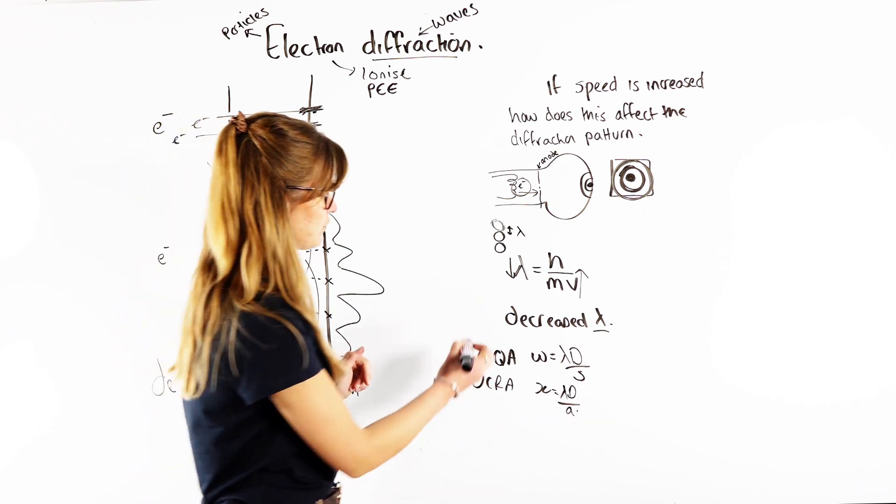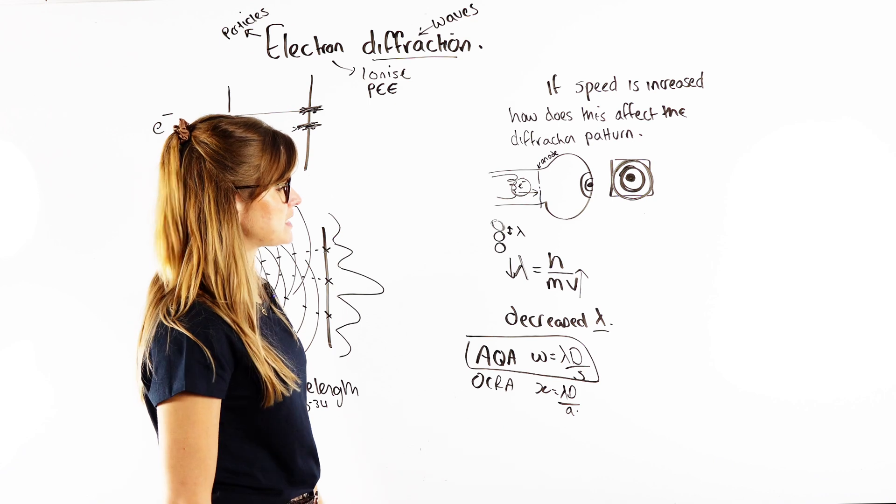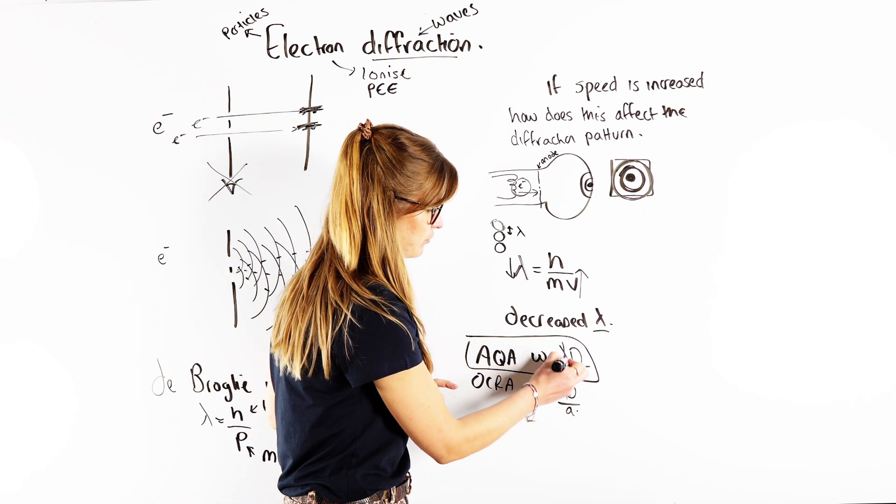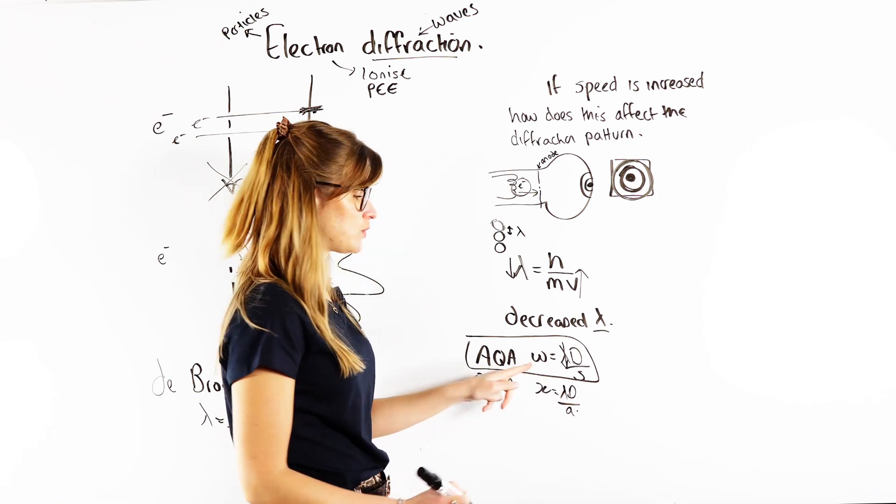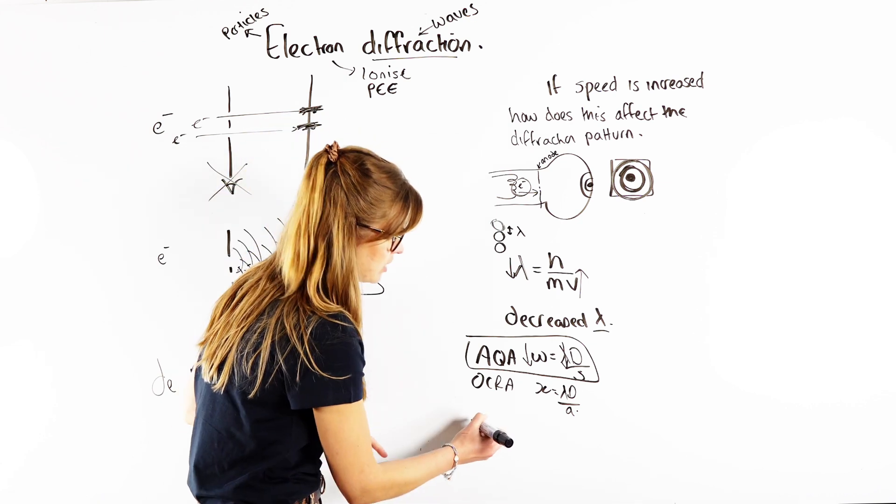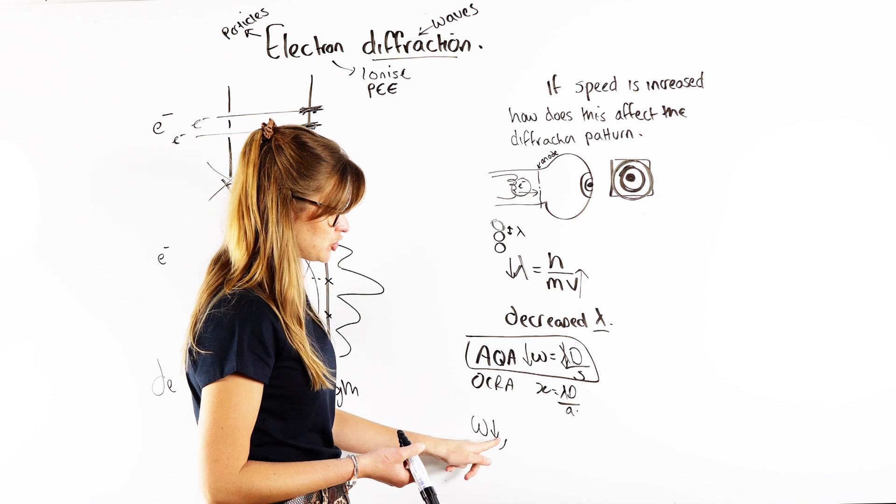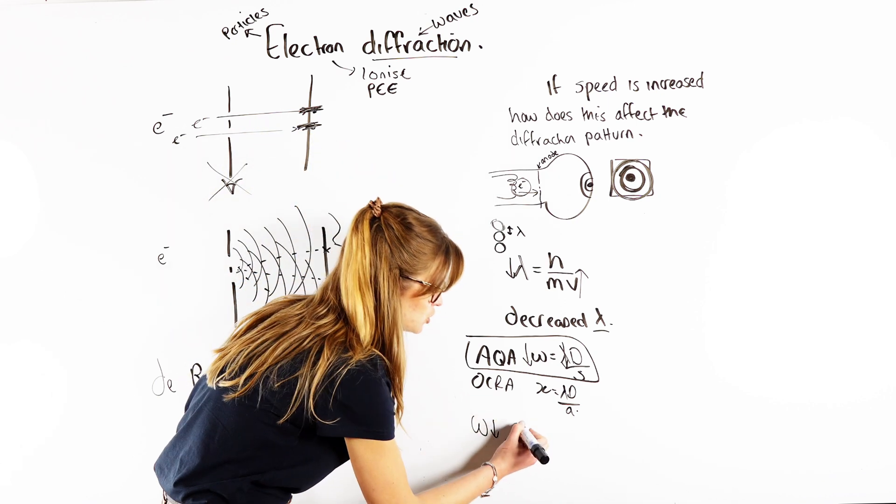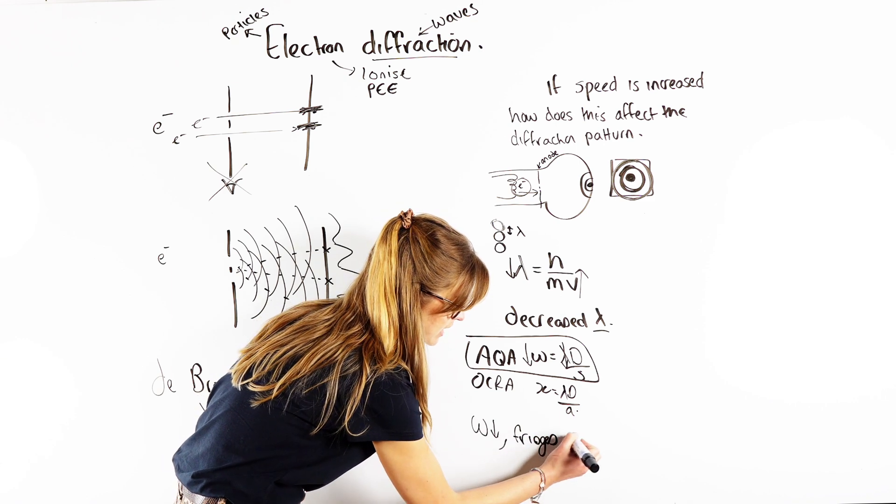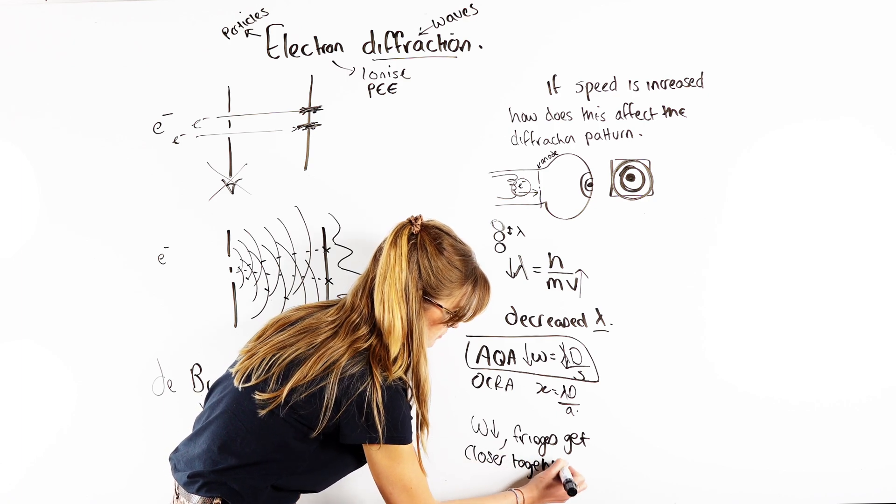So what we're saying now, if the wavelength gets decreased, so let's say we decrease the wavelength, what's going to happen to the value of W? So we can say if we decrease the wavelength, the value of W is going to decrease. So what I'm saying now is W gets decreased, or if you're doing OCR A X, if W gets decreased, we know that that represents our fringe spacing. So the fringes get closer together.